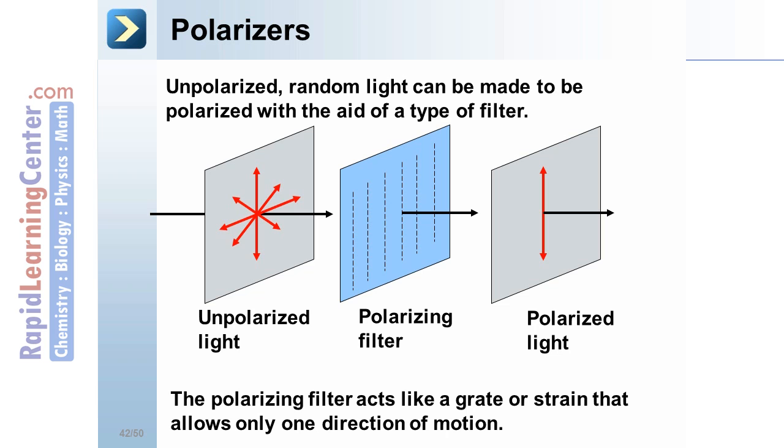This polarizing filter acts like a grate or strain that allows only one direction of motion. A good analogy is a picket fence and a rope. Imagine you have a rope passing through the slot in a picket fence. You can shake or vibrate that rope in any direction.